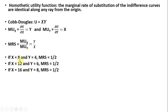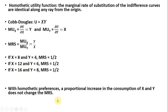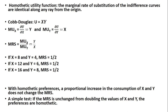If we were to double our initial consumption bundle, the marginal rate of substitution would be unchanged. With homothetic preferences, a proportional increase in the consumption of x and y does not change the marginal rate of substitution. A simple test we can conduct is if the marginal rate of substitution is unchanged from doubling the values of x and y, the preferences or the utility function are going to be homothetic.